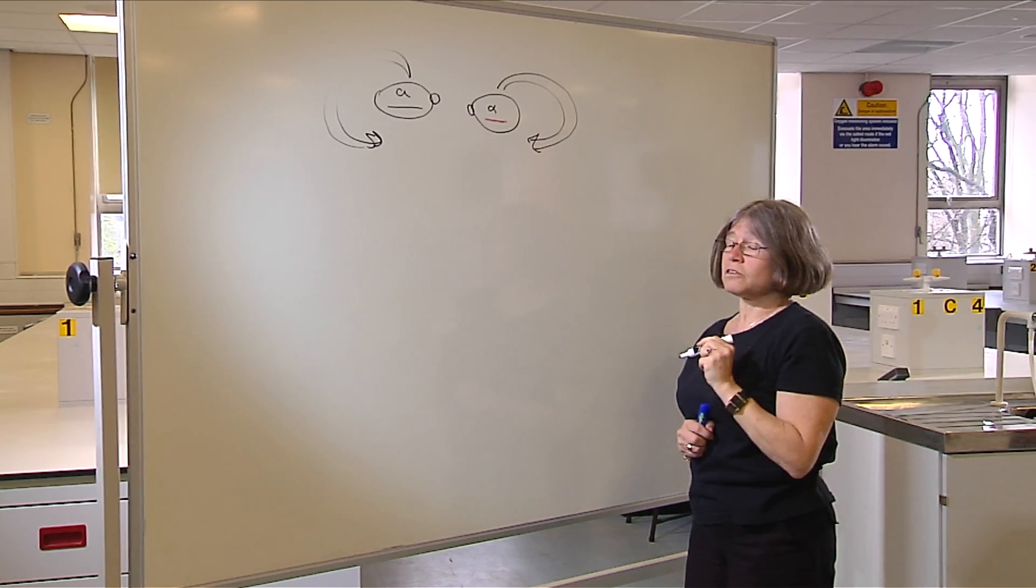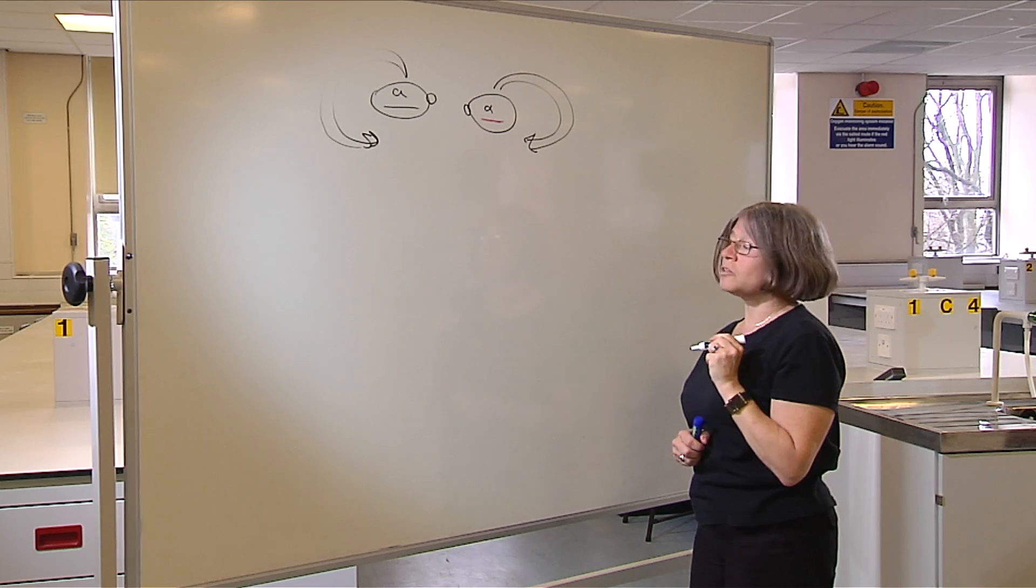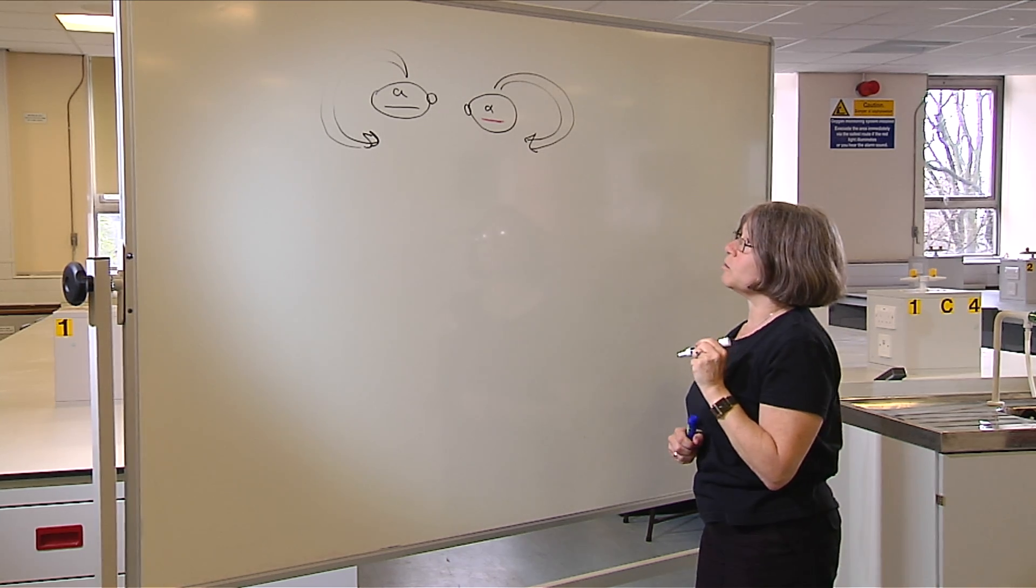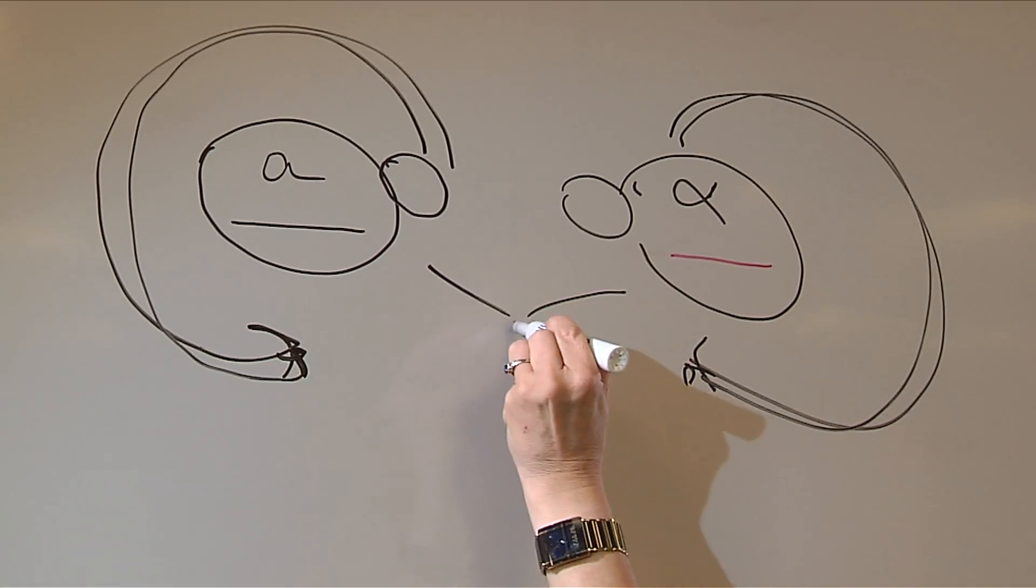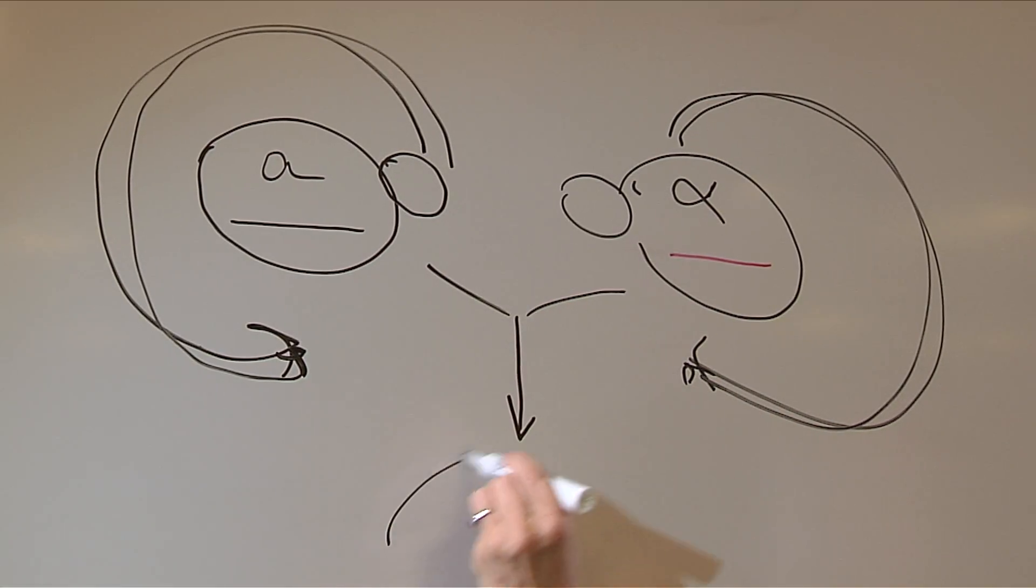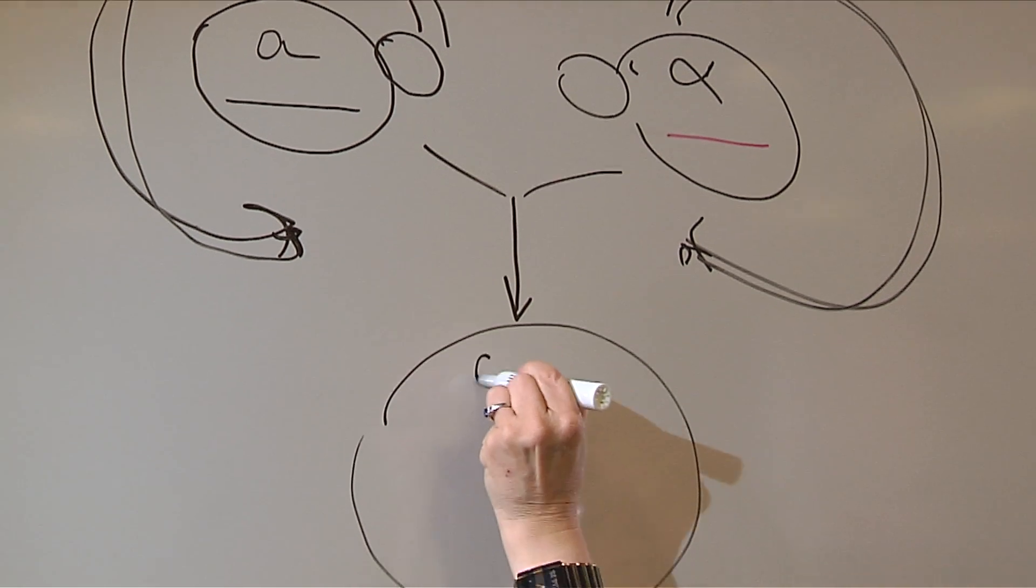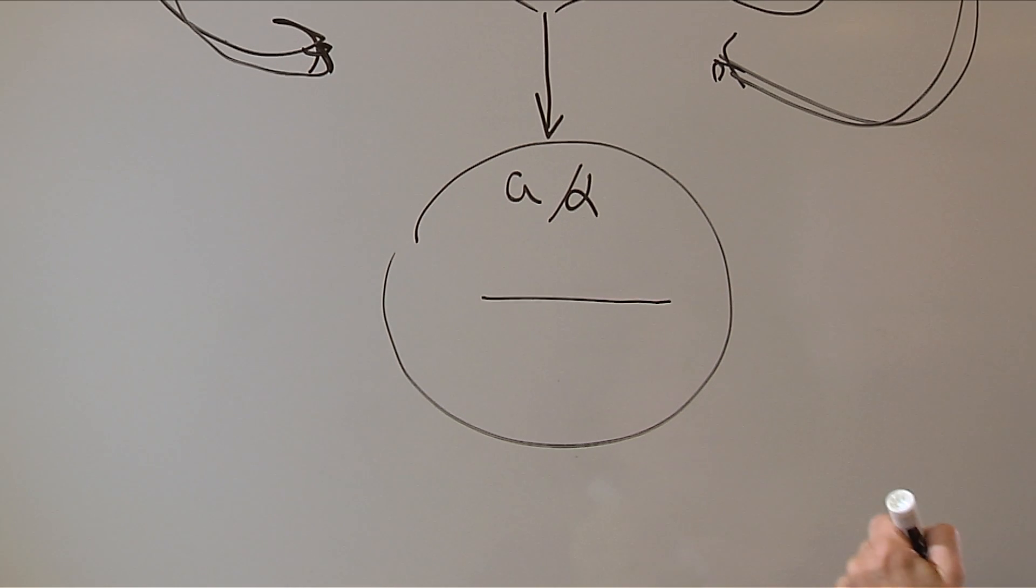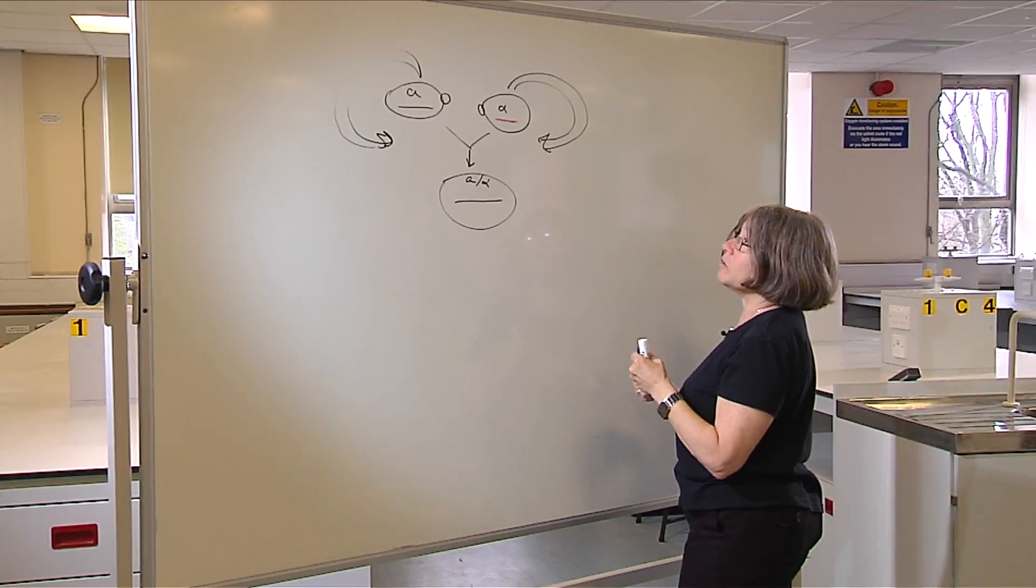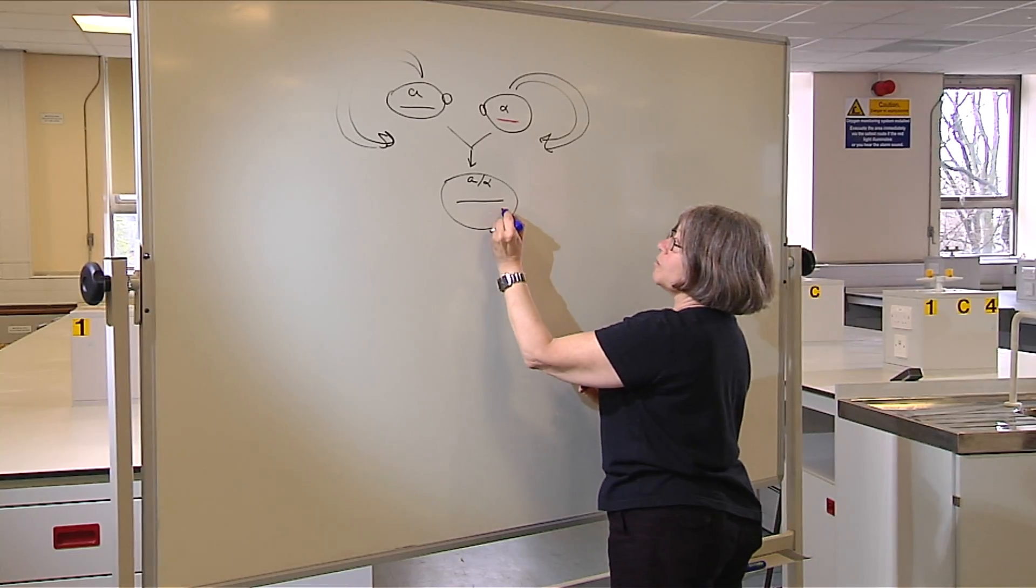However, one of the major advantages of yeast is that we can control whether it's haploid or diploid. We can put these two cells together and they'll mate and make what's called an A-alpha diploid. Now we have a cell that's got A and alpha information and it's got one chromosome from the A parent and a chromosome from the alpha parent.